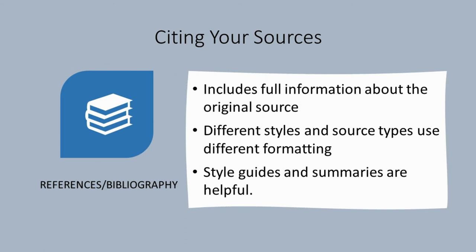An important thing to note is that different types of sources require different types of information in the reference. A book is slightly different from a book chapter, an article, or a video. You can get complete examples of how to cite different types of sources in the style guide or by consulting a summary online. We'll link to some good summaries in the resources section of this tutorial.